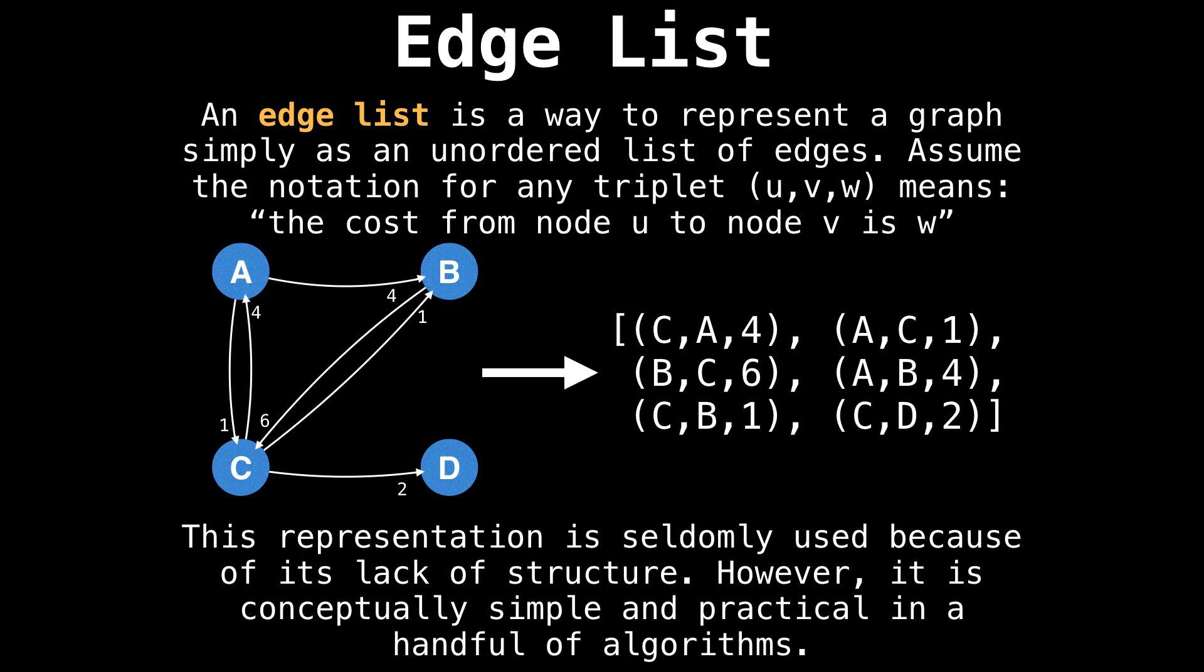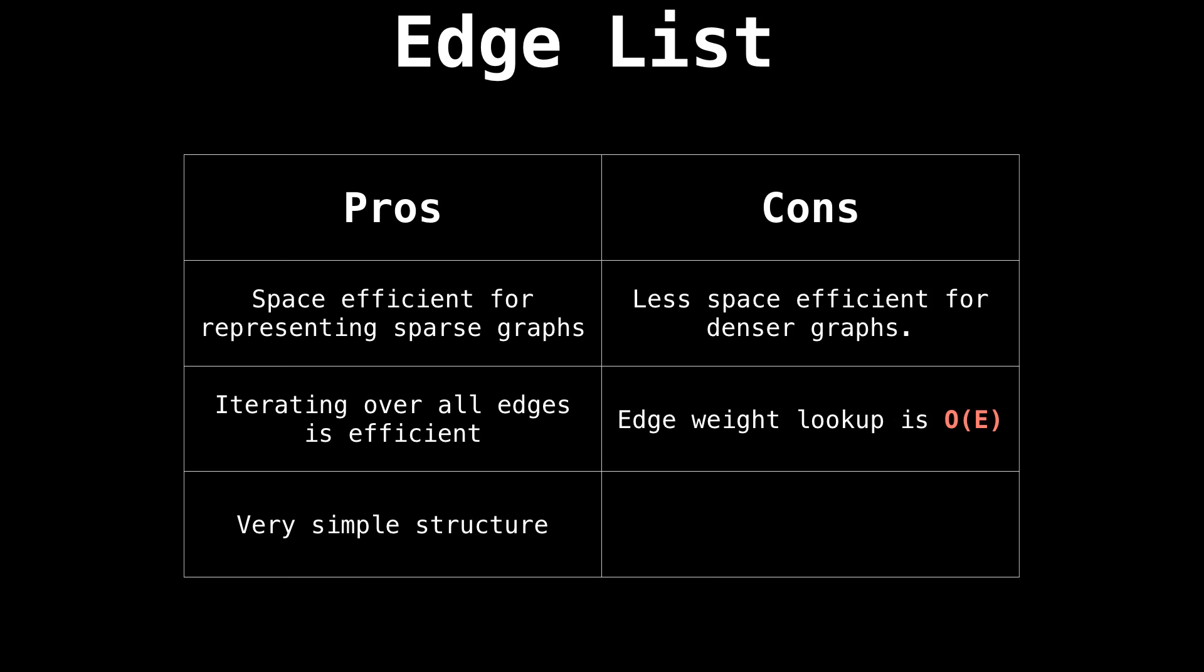This representation is very simple. However, it lacks structure and that's why it is seldomly used. The advantage to the edge list is it's great for sparse graphs, iterating over all the edges is super easy, and the structure is simple. The downside is that edge lookup can be slow and you can run into memory issues on large graphs.